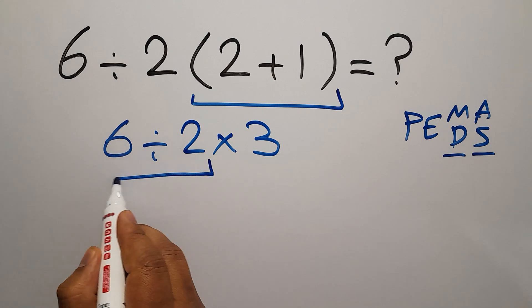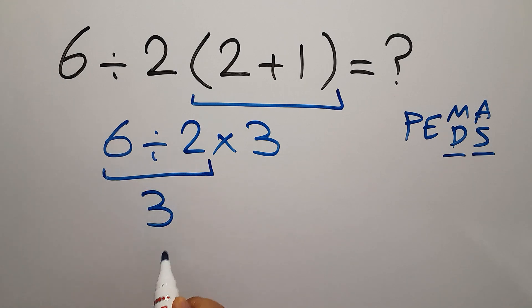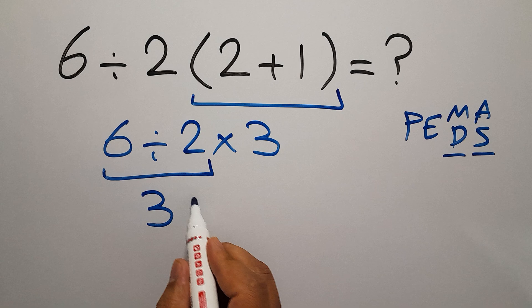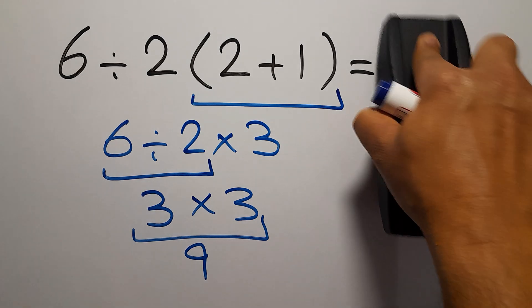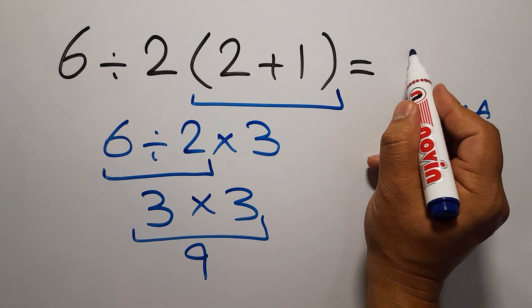6 divided by 2 gives us 3. So, we have 3 times 3, which equals 9. So, therefore, our final answer to this problem is just 9. The correct answer is 9.